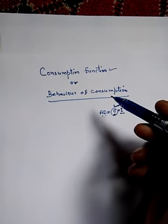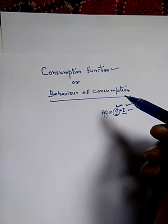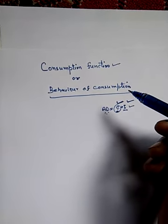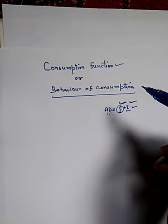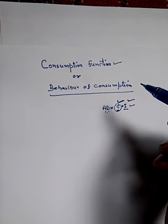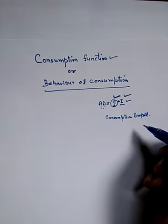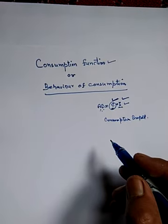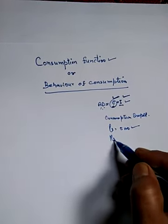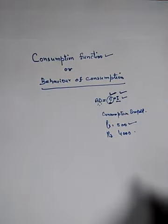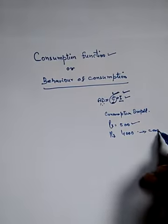Consumption expenditure is the amount of money spent by people on purchase of goods and services in order to satisfy their wants directly. For example, if the total income of an economy is rupees 5,000 crore and out of that rupees 4,000 crore is spent on consumption of goods and services, then consumption expenditure is rupees 4,000 crore.